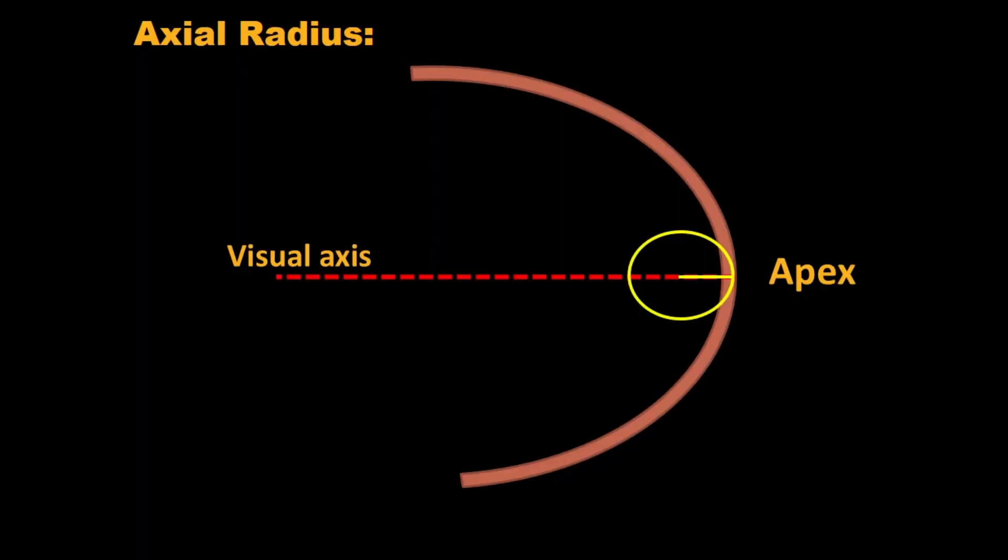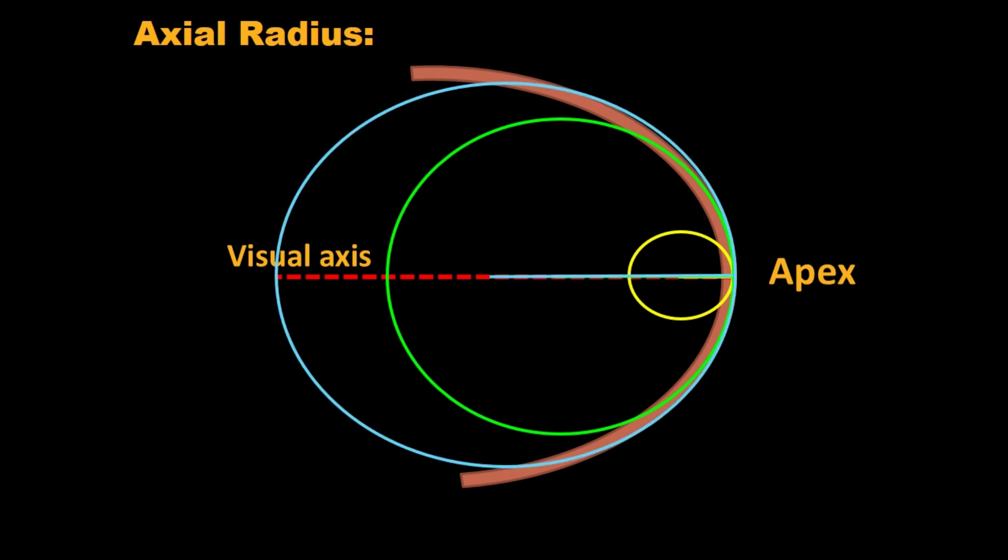Axial radius for any point is defined by the radius of a sphere fit to that point and centered on the optical axis. So it has a spherical bias, that's to say, considers the cornea as part of a sphere. Hence, it's not accurate in the peripheral aspheric cornea.